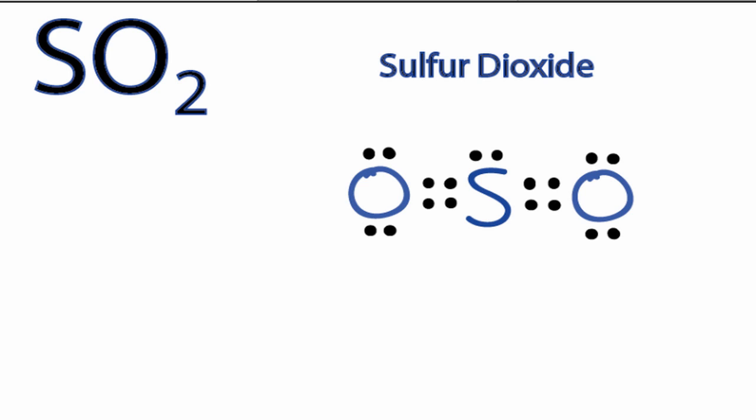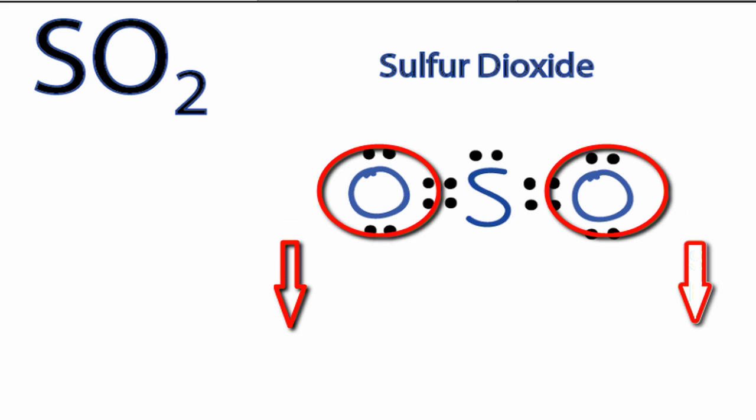This is because electrons are negative and they repel each other. The Lewis structure doesn't tell us this directly, but if we visualize the atoms and unbonded electron pairs on that central atom repelling each other, we'll see that the oxygen atoms move away from the unbonded pair and give the molecule a bent shape.